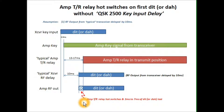So you get two problems because of this slow TR relay and amplifier: you get hot switching, and you lose part of your first dit or dah of your transmission.